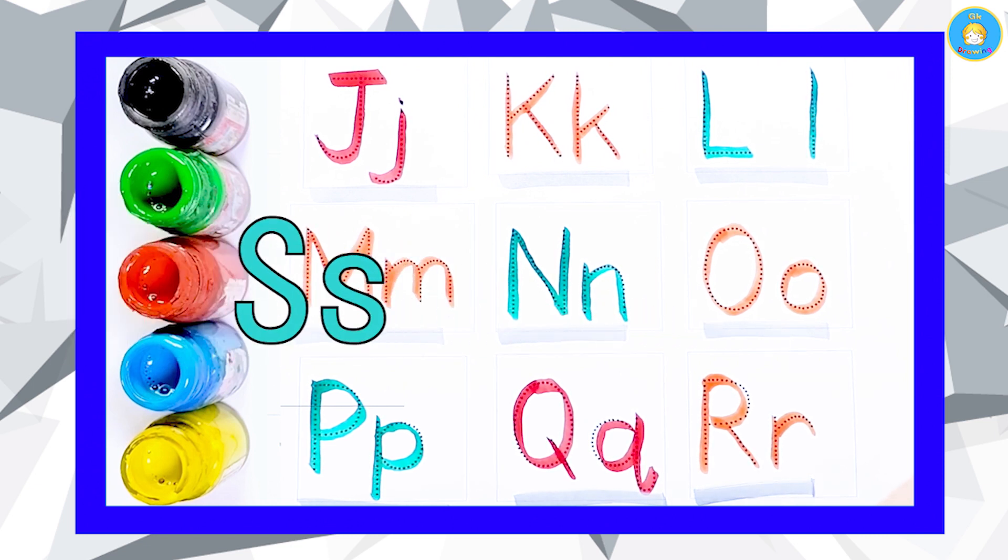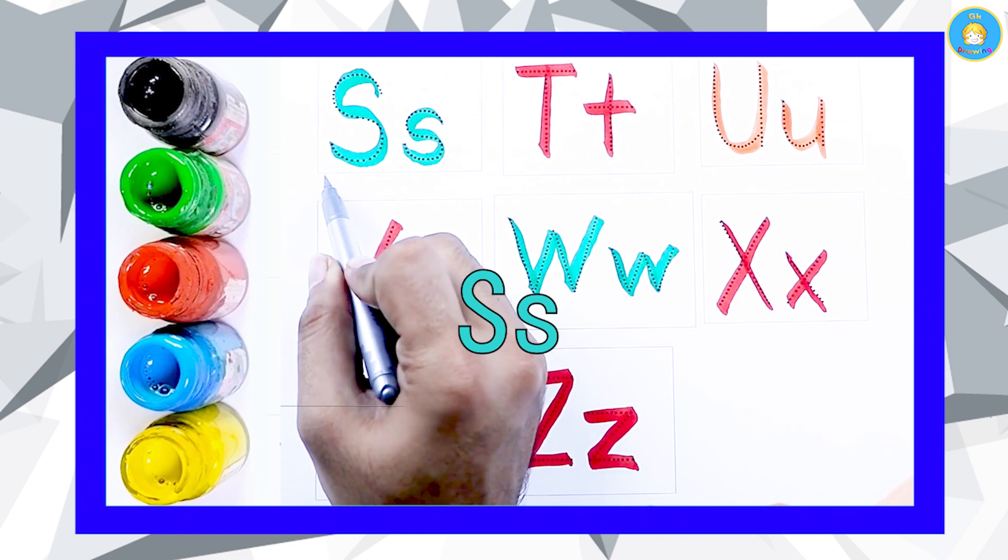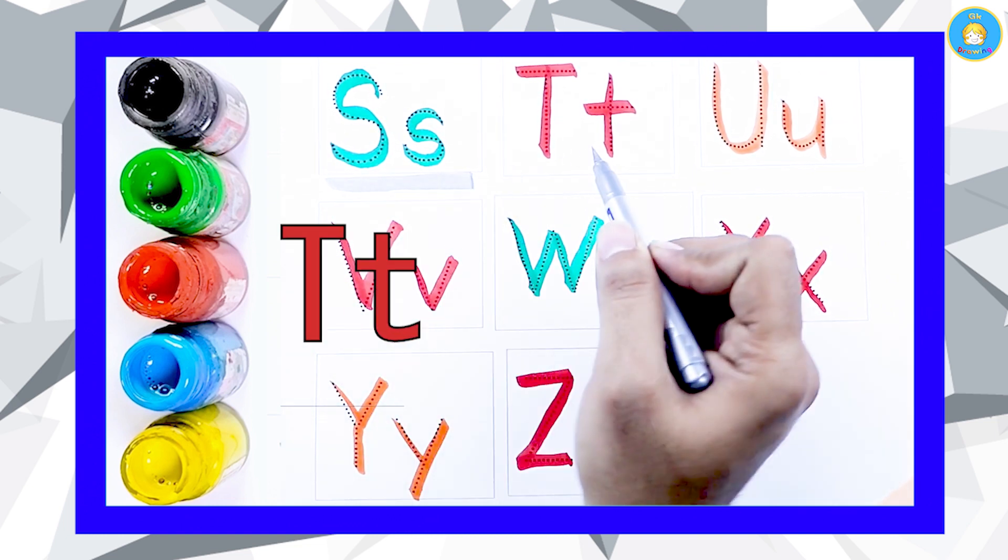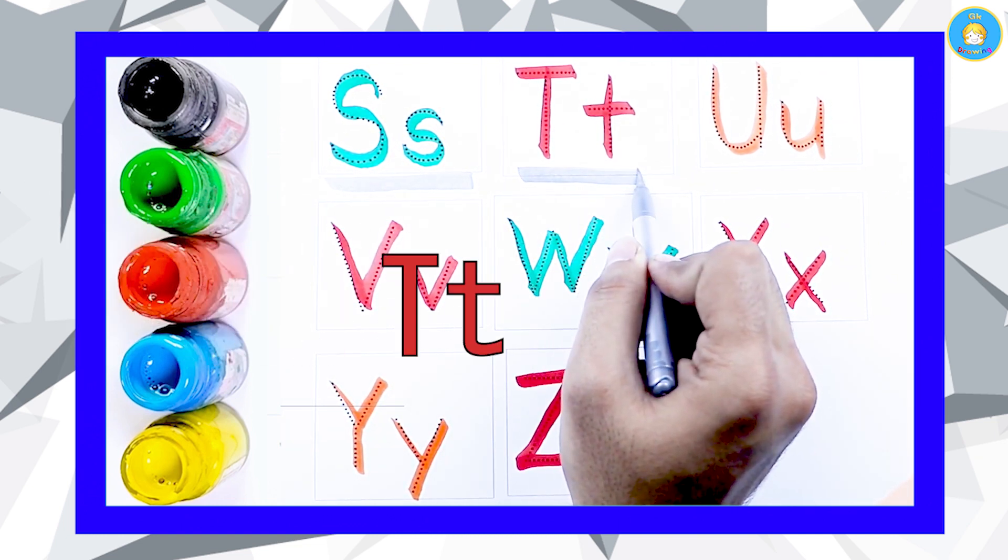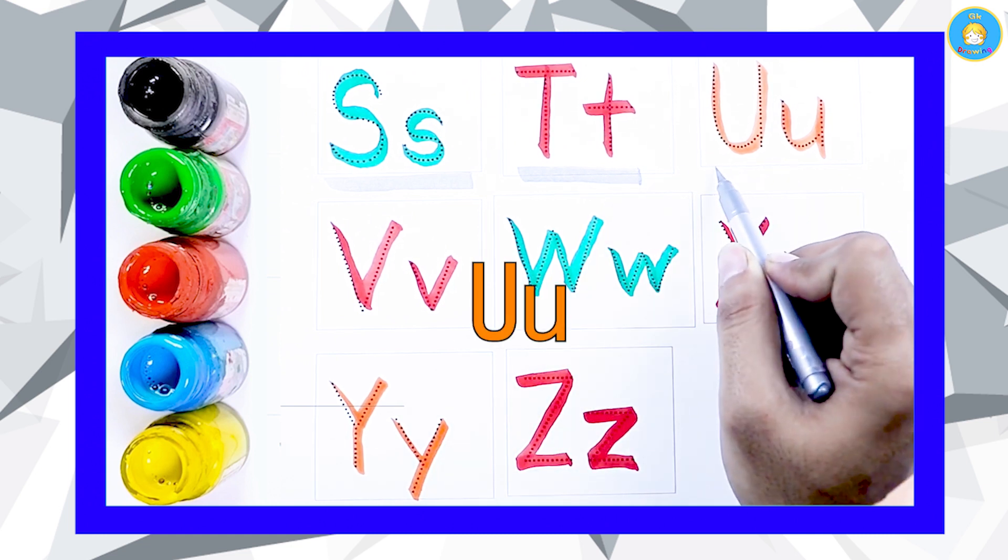Green color S, S for Seed. Red color T, T for Tiger. Orange color U, U for Umbrella.